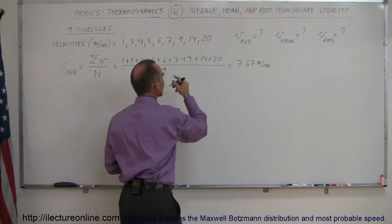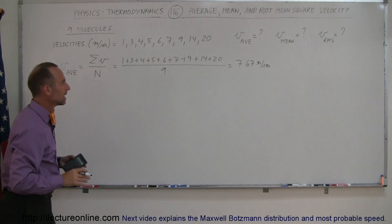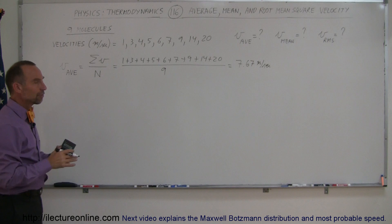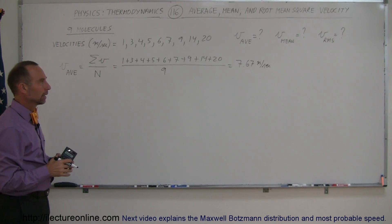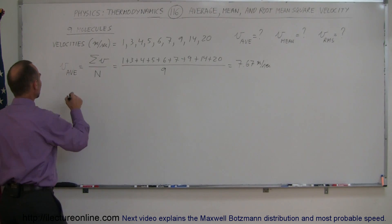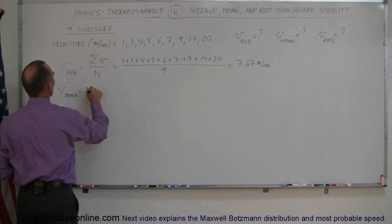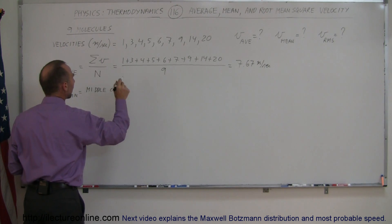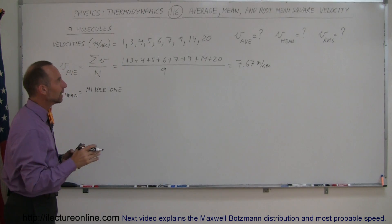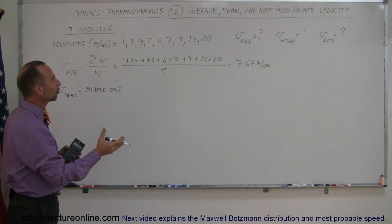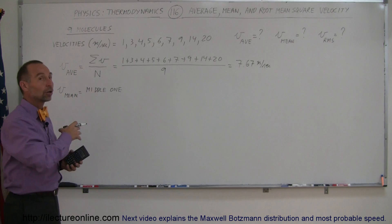Of course, I left off the units there, but at least you could see the technique. So that would be the average velocity. The mean velocity, V mean, is simply equal to the middle one. So I pick one that has just as many velocities that are smaller than as there are larger than that quantity.